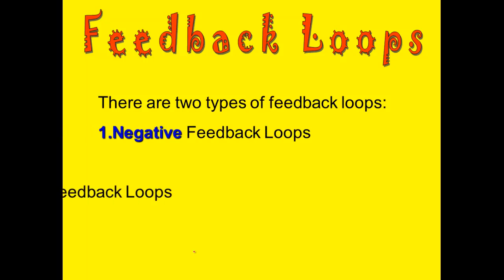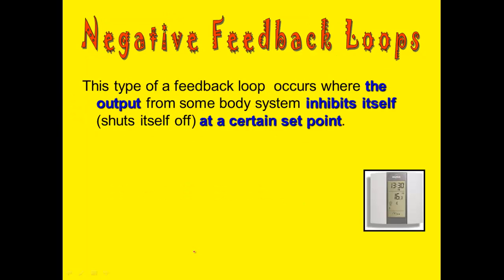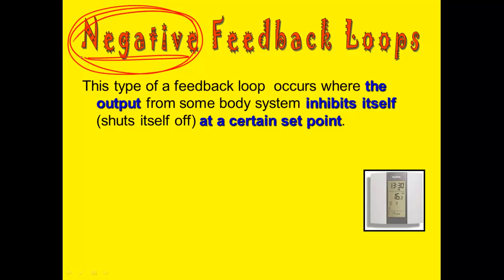There are actually two different types of feedback loops: negative loops and positive loops. We're going to start by learning about negative feedback loops, which is the type we talk about most in this class. This is the type of feedback loop where the output of the system will actually inhibit itself or shut itself off when it gets to a certain point.